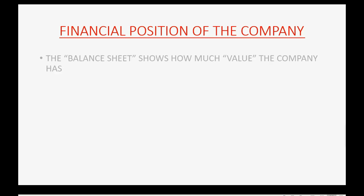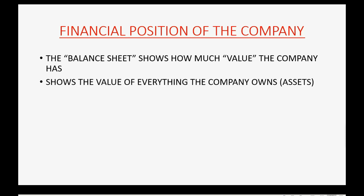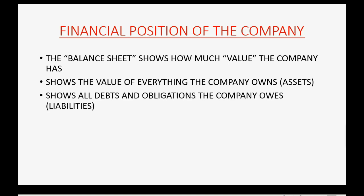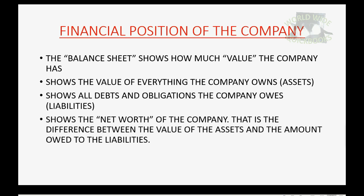Now let's talk about the other report — the report that shows the financial position of the company. It's called the balance sheet, and it shows how much money or value the company has. It shows the value of everything the company owns, meaning how much they paid for the assets. It also shows all the debts and obligations of the company, assigns a money value to those, and they are called liabilities. It shows the net worth of the company, which is defined as the difference between the value of the assets and the amount owed to the liabilities.